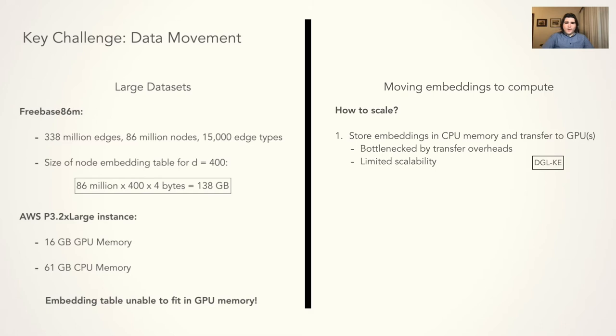One approach used by Amazon's DGLKE is to use a machine with a large pool of CPU memory and transfer batches to the GPU synchronously. However, this results in slow training due to data transfer and is fundamentally limited by CPU memory capacity.